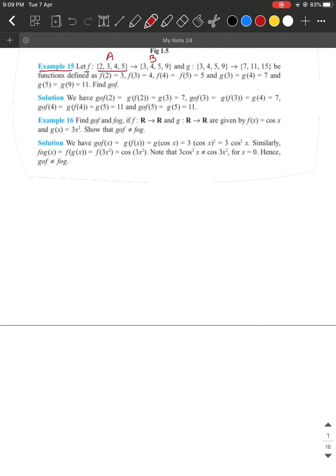Similarly, G is a function defined from a set with elements 3, 4, 5, 9. This set will be B. If you observe, both B are the same, and this set will be C. Certain function values are given: F of 2 is 3, F of 3 is 4, F of 4 equals F of 5 is 5. G of 3 and G of 4 are 7, and G of 5 and G of 9 are 11. Our work is to find what is G circle F.